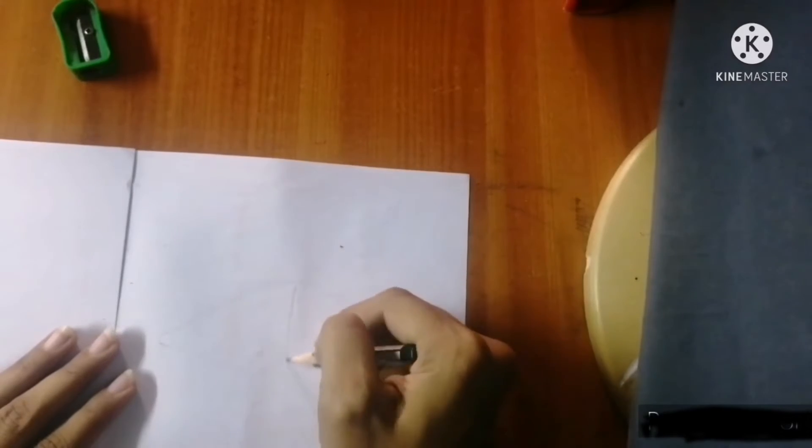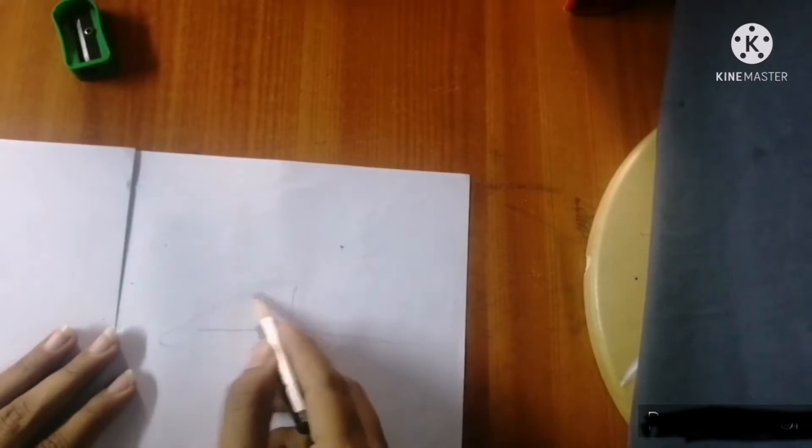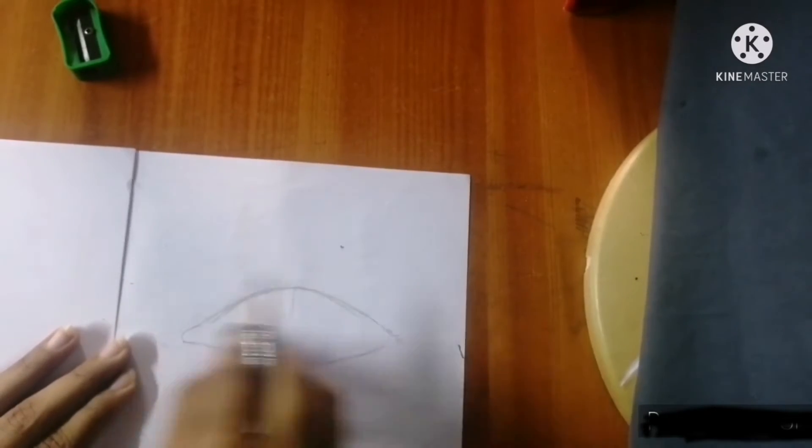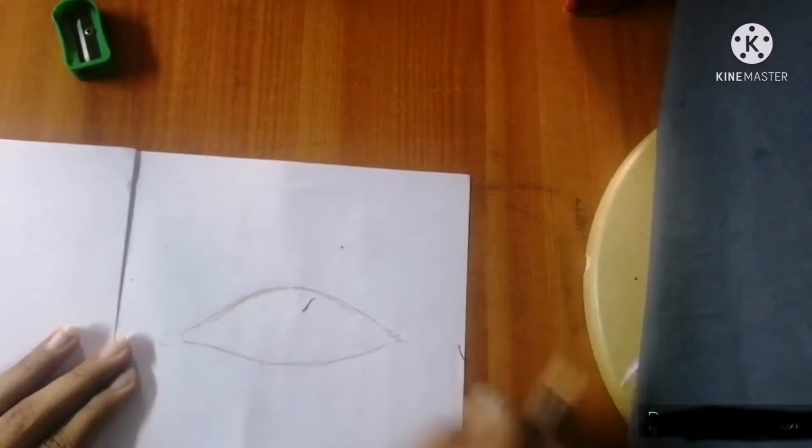First, we will make a standing line and a sleeping line for the eyebrows. We will make them look at each other, then we will rough out the shape.